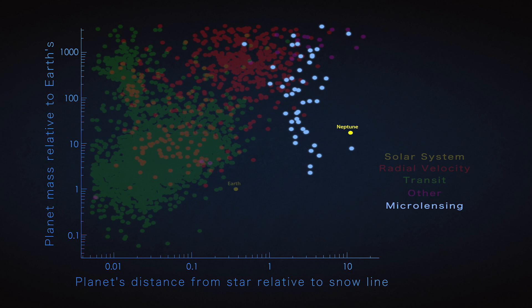That distance is what astronomers call the snow line, where water would be frozen during the formation of a planetary system. For our system, that location is roughly 2.7 times farther from the Sun than Earth.